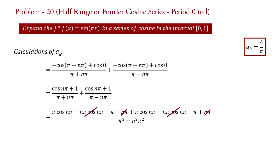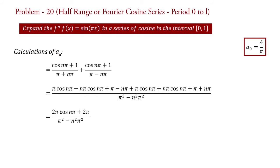The negative terms cancel with the positive terms, and minus nπ cancels with plus nπ. Taking 2π common from the numerator and π² common from the denominator, we get aN equal to 2(cos(nπ) + 1) upon π(1 − n²).